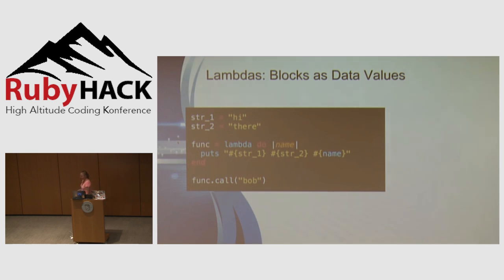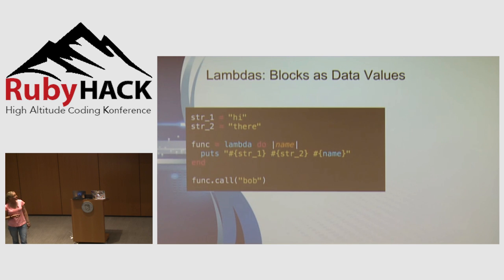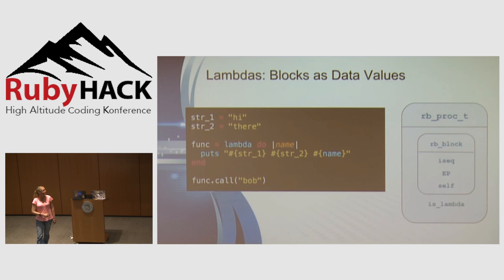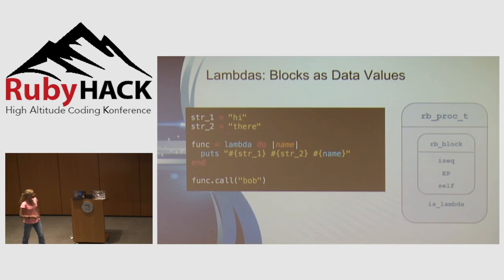I mentioned lambdas — what is a lambda if not just a block as a data value? Here's a simple example of a lambda being created: we pass it a block using some local variables and do a simple call on that lambda. In the underlying C code for Ruby, a lambda is an object called obj_proc_t. It has a block property with all the usual things inside it, and also a property called is_lambda — set to true for a lambda and false when creating a proc using the proc keyword. That's the main difference between a lambda and a proc in the underlying C code.